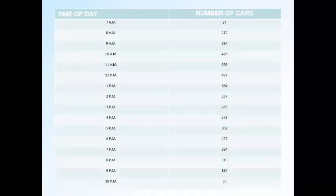Look at the time of day. 7am there are 24 cars. At 8am there are 212. If you look down the first column, the time of day, you will see each time is different. And across from it, there is only one value.